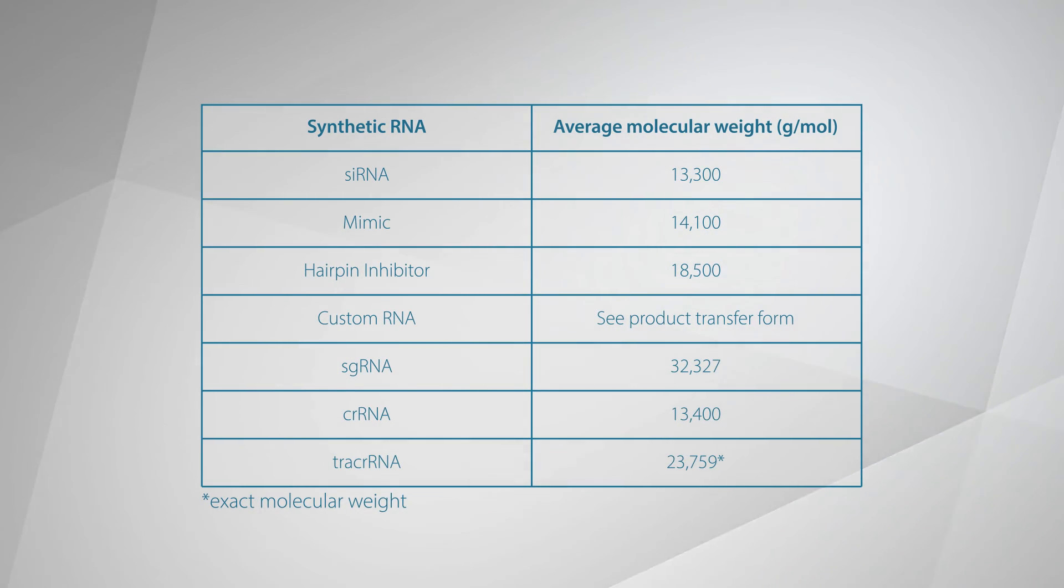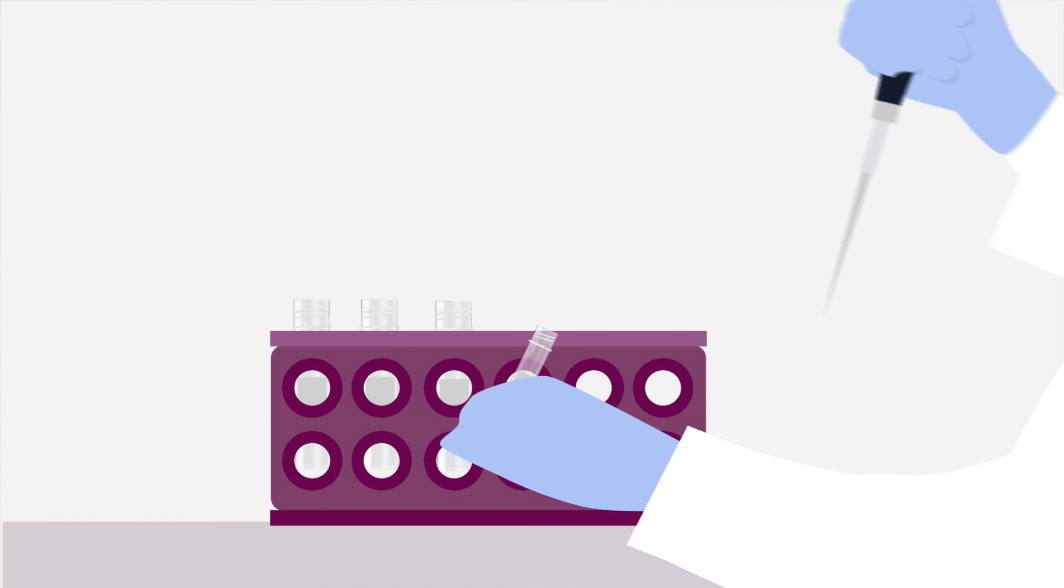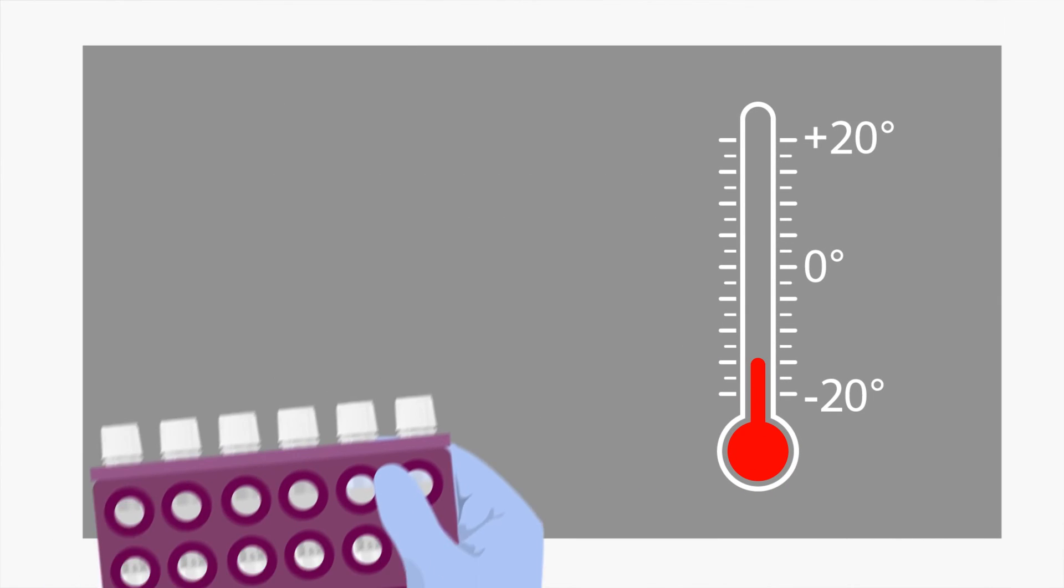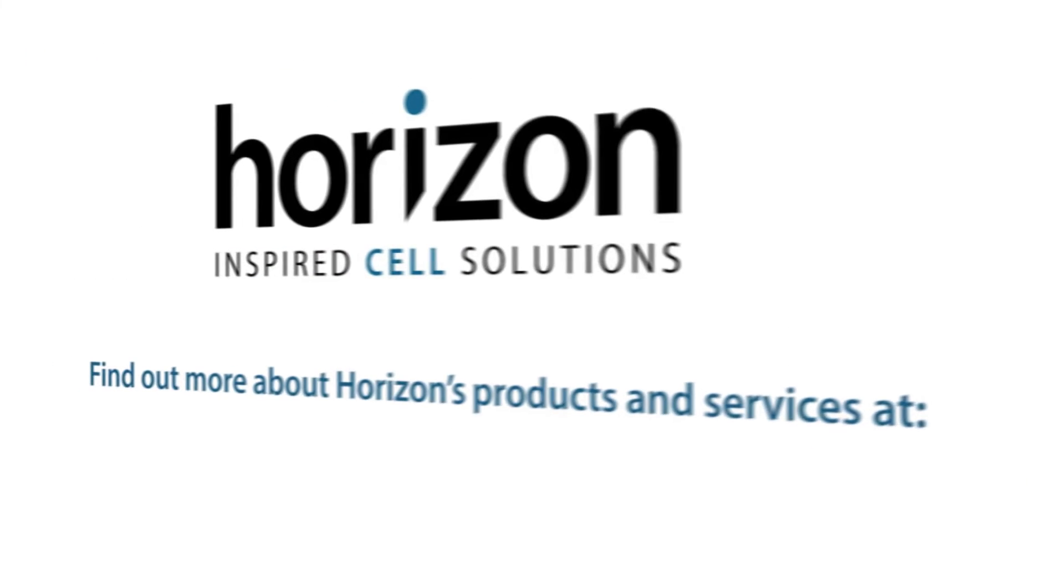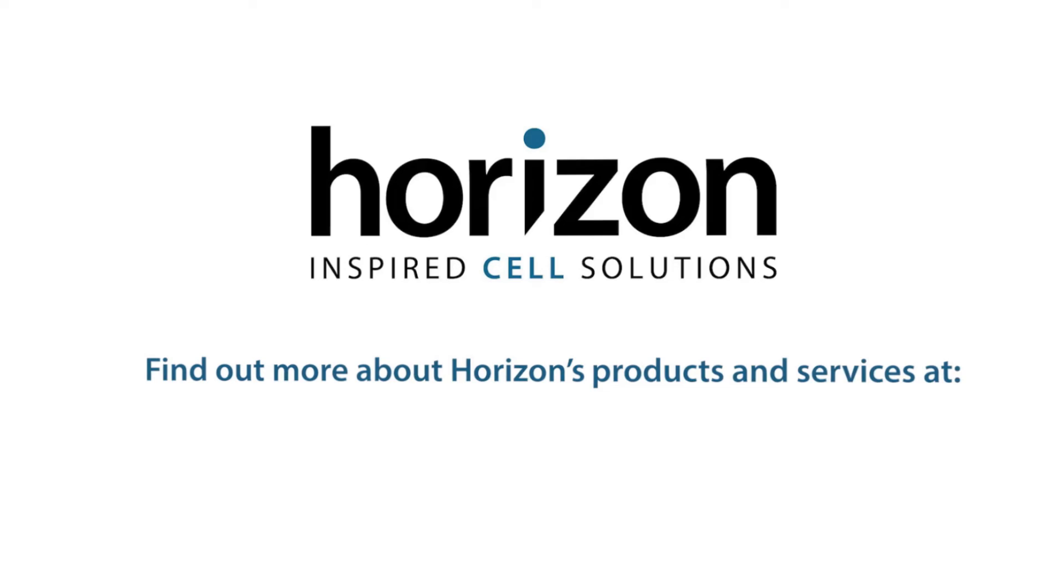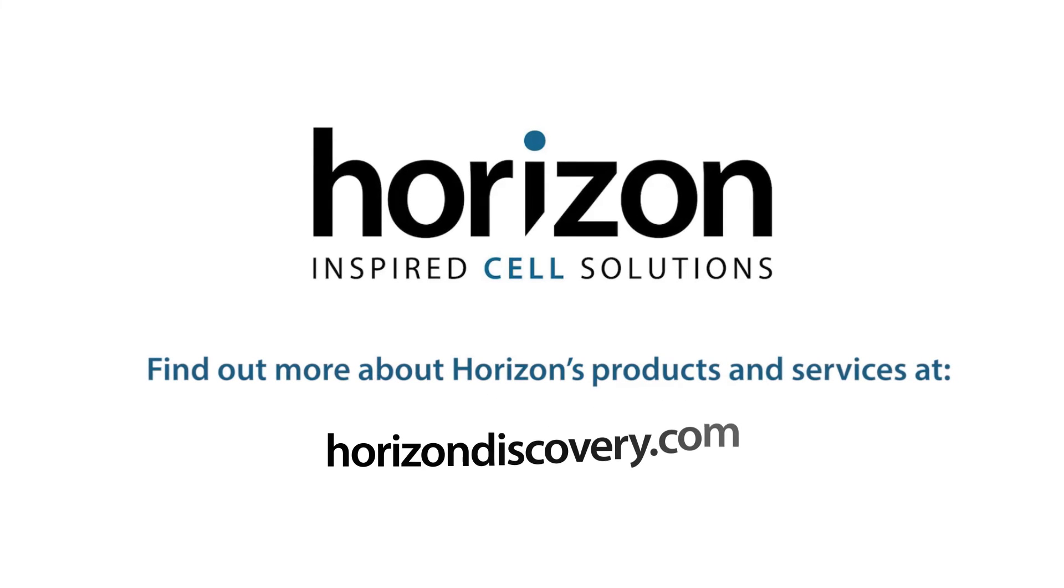The siRNA is now ready to use. For longer term storage, the siRNA may be aliquoted into working volumes to reduce freeze-thaw cycles. Storage at minus 20 to minus 80 degrees Celsius is recommended. The siRNA may be stored at 4 degrees Celsius for up to 4 weeks. Find out more about Horizon's products and services at horizondiscovery.com.